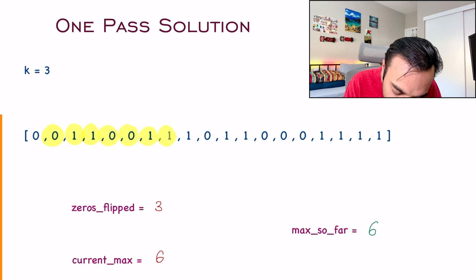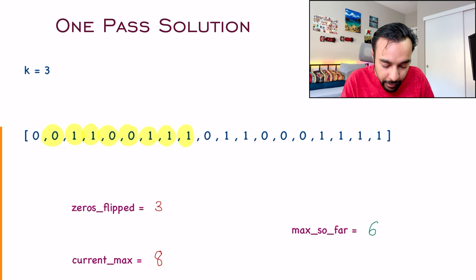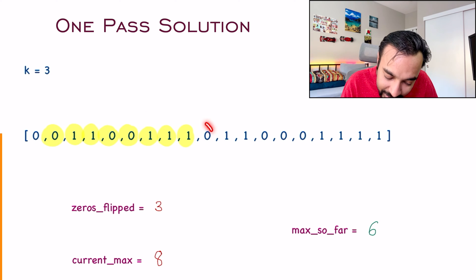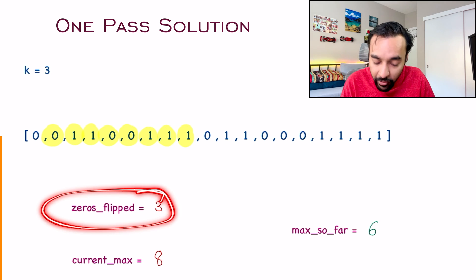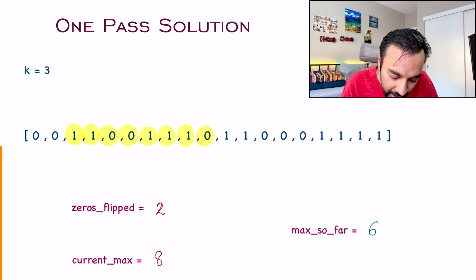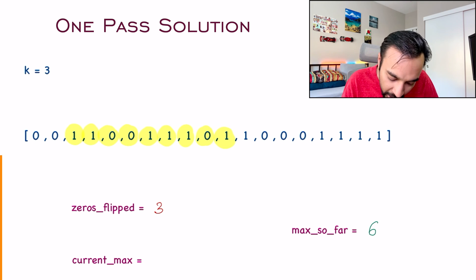Moving ahead you see a 1 — current max changes to 7. The next value is 1 again — current max changes to 8. In this window you only flipped 3 zeros. Now you move ahead and see a zero — can you flip it? No, you have already flipped 3 zeros. So you need to remove one zero from the back, which changes the window size. You include one more element and zeros flipped goes back to 3. Moving further you see a 1, window increases, current max becomes 9 and maximum so far also updates.